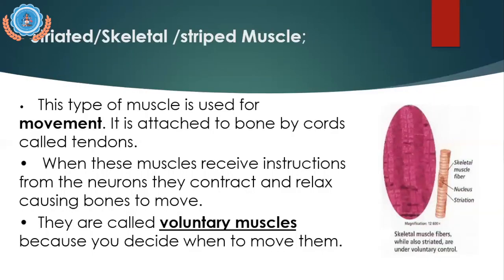The first type is the striated, skeletal, or striped muscle — you can use those words interchangeably. This type of muscle is used for movement. It is attached to bone by cords called tendons. These muscles receive instructions from neurons and then contract or relax, causing bone to move. They are called voluntary muscles because you can decide when to move them.